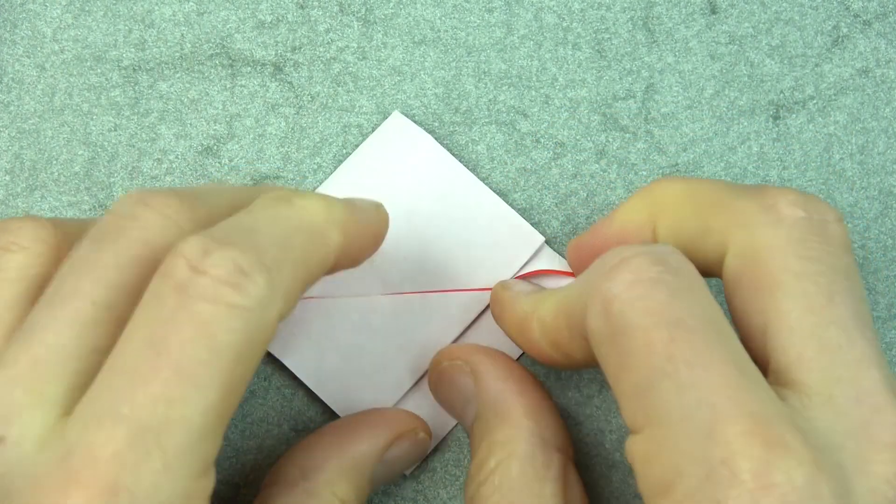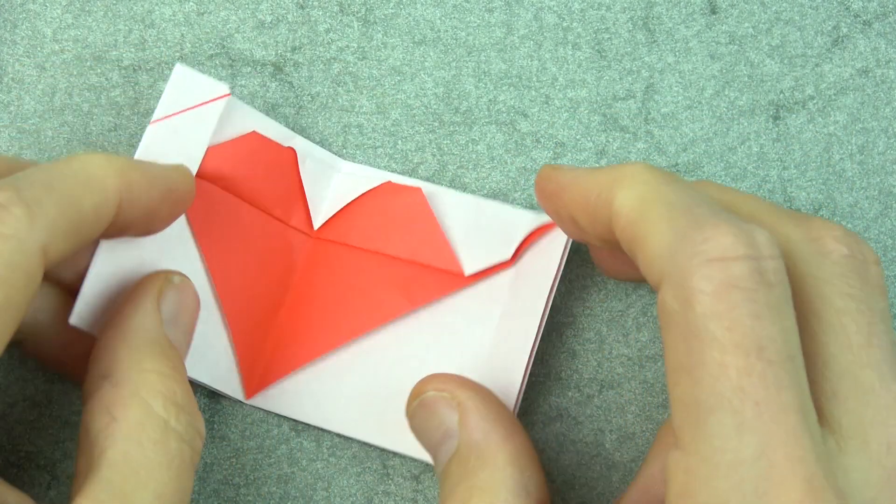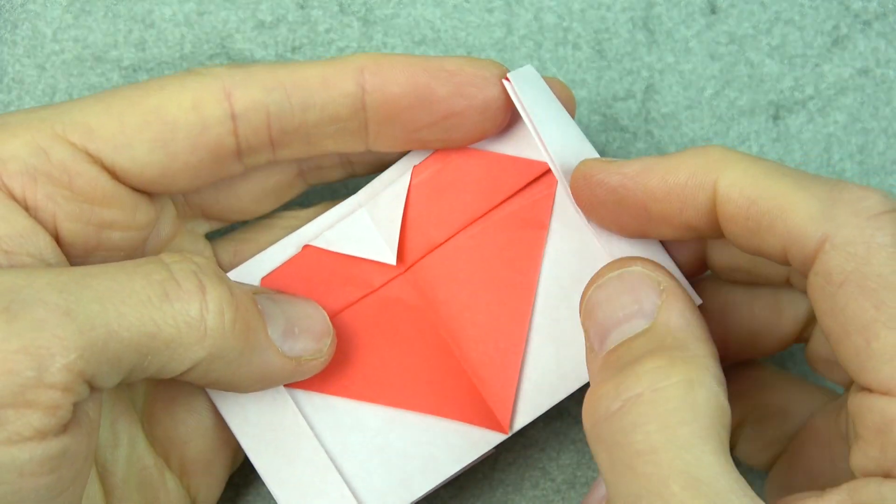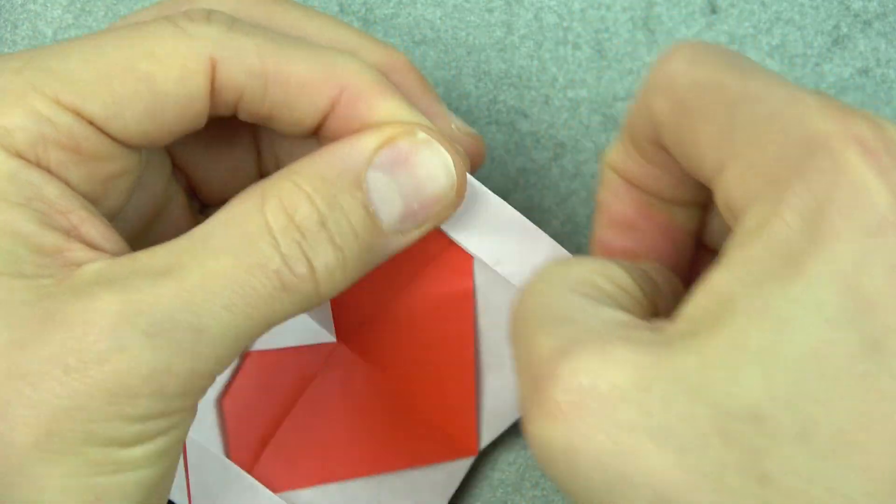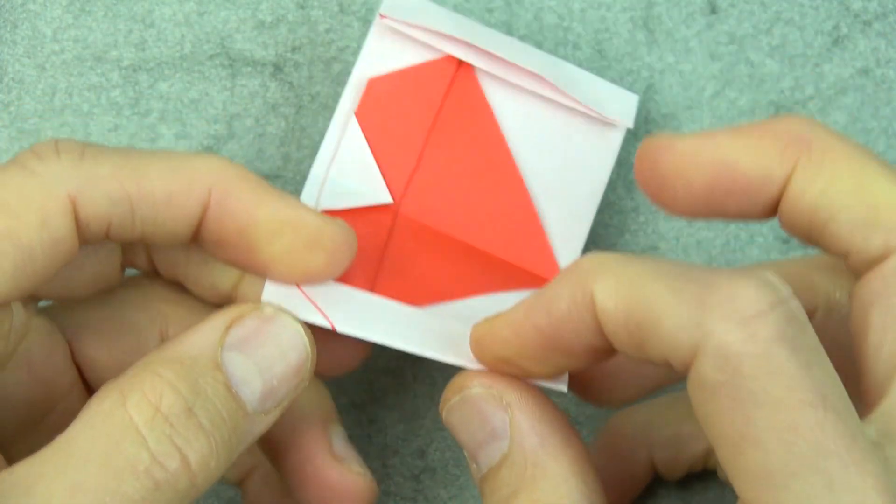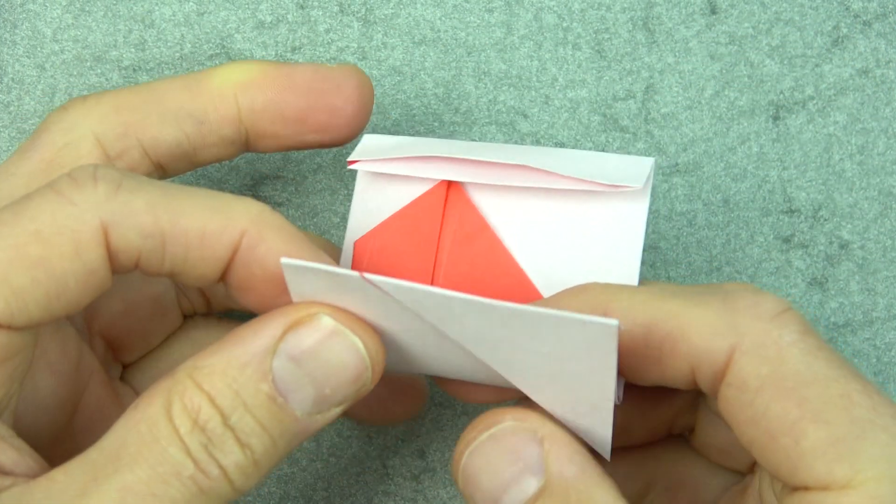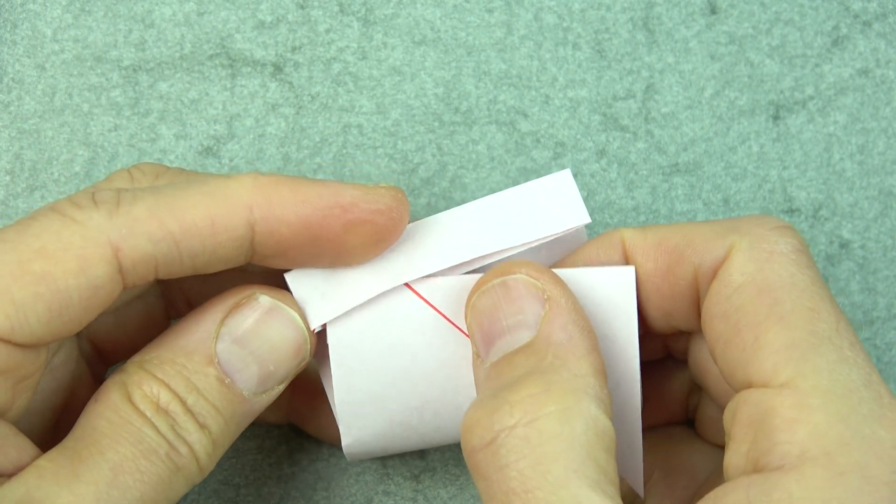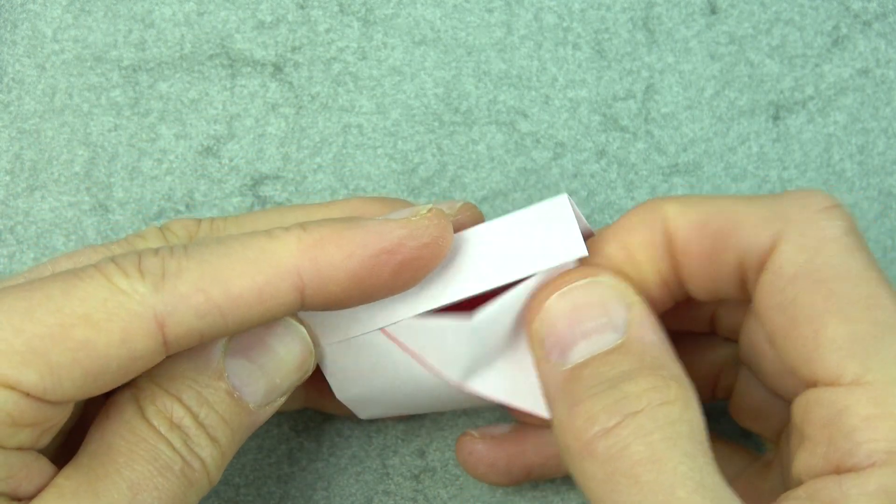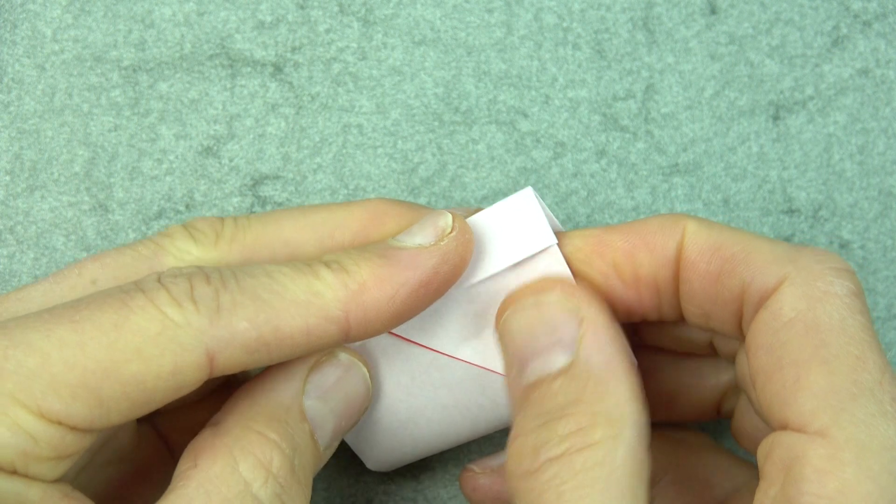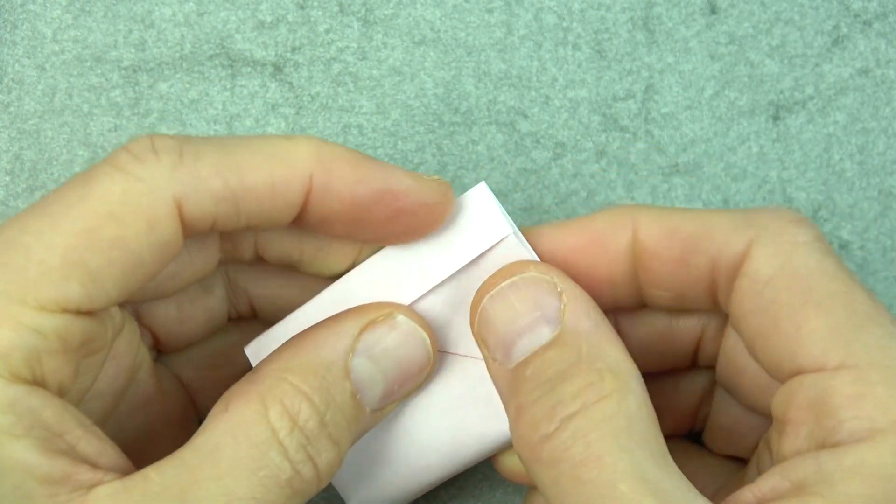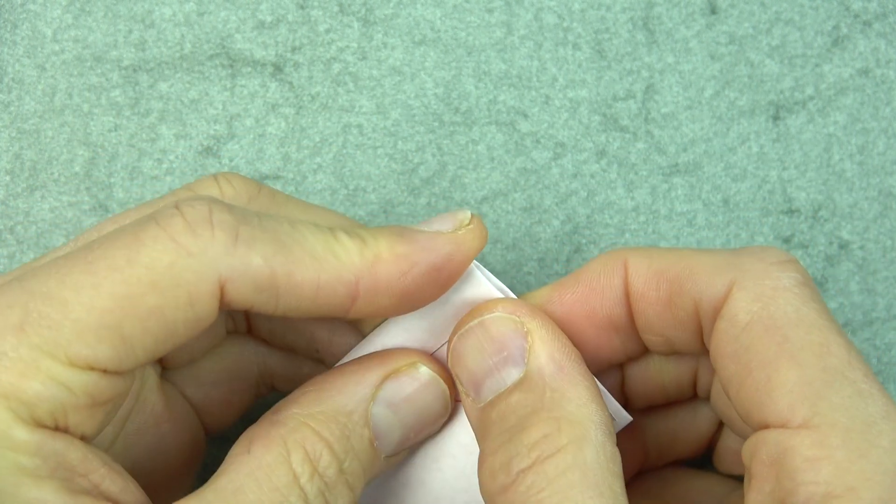And unfold and unfold and refold this flap. And now let's stick this edge into this pocket, so fold in half and insert it into the pocket. And try to make it go all the way in.